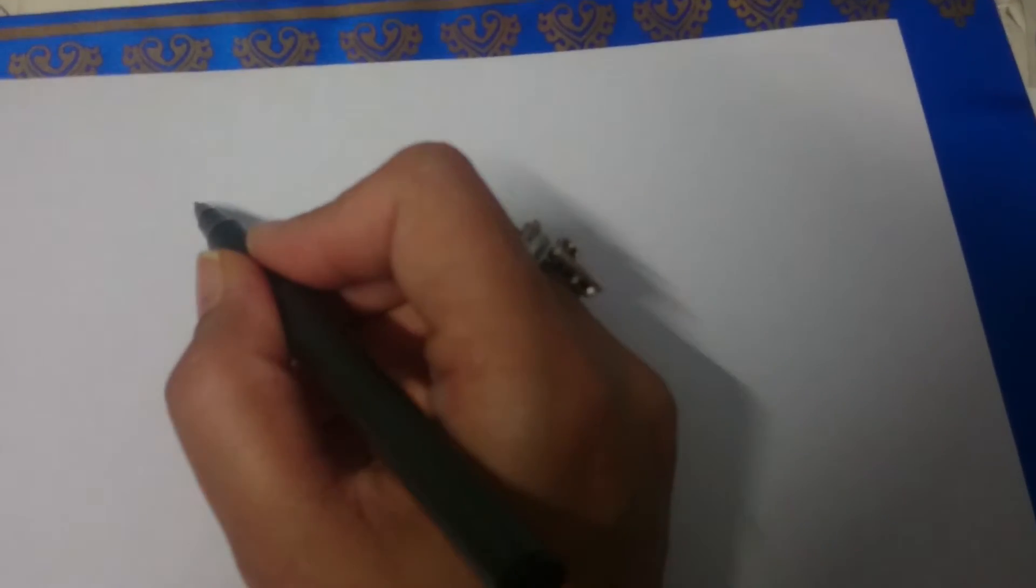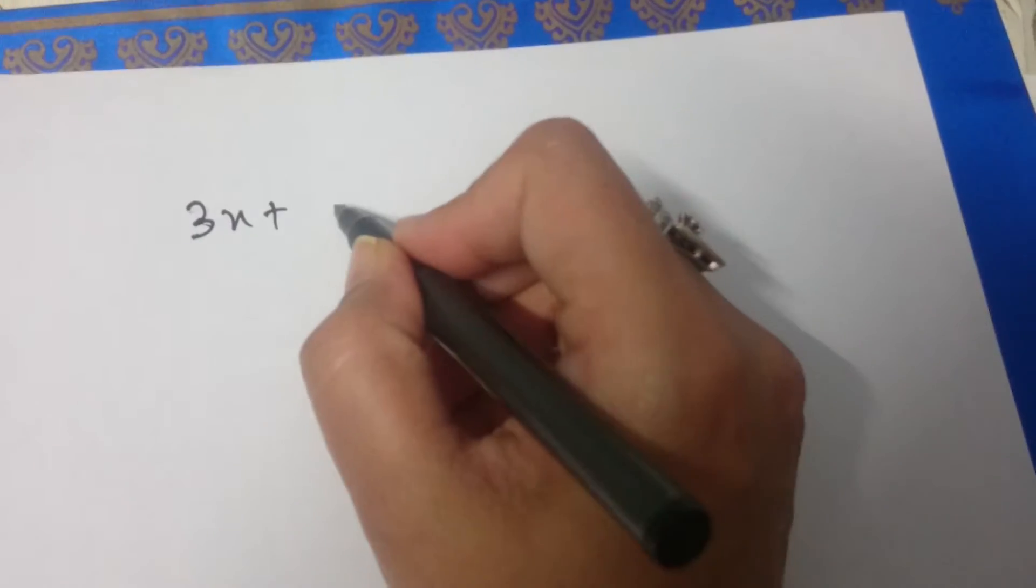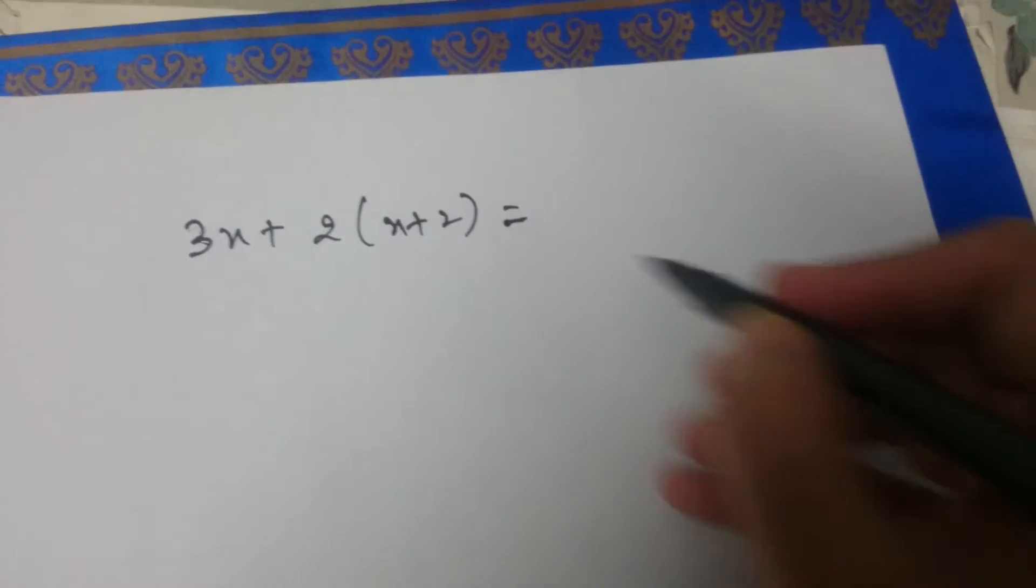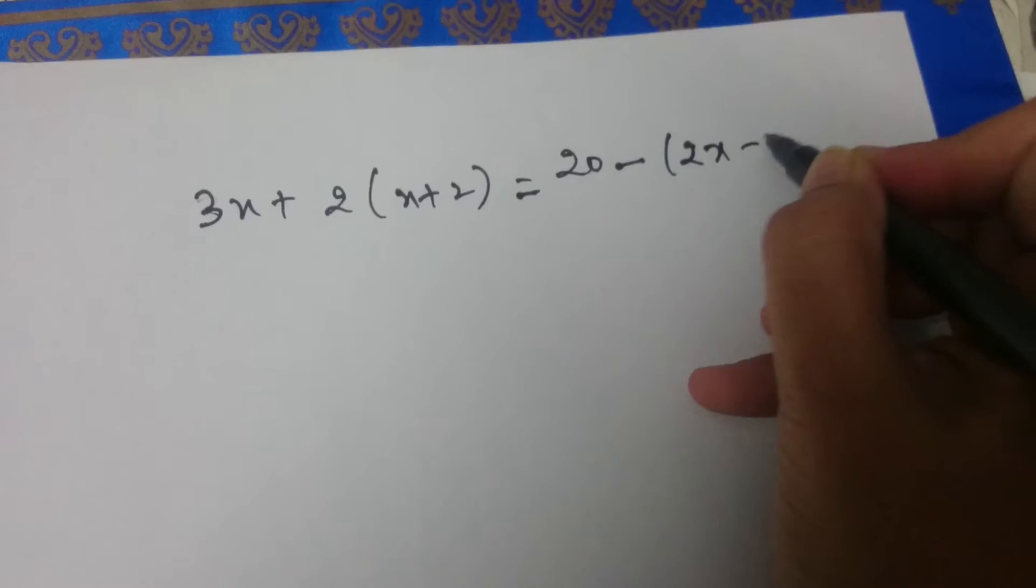Let us simplify another linear equation in one variable. 3x plus 2 into x plus 2 is equal to 20 minus 2x minus 5.